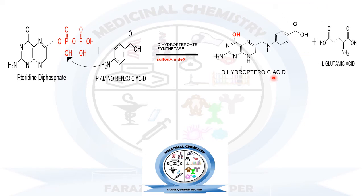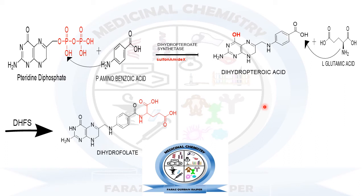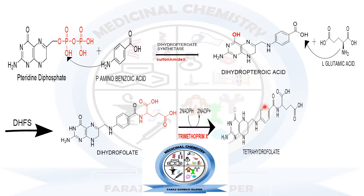In the next step, dihydropteroic acid will combine with L-glutamic acid. L-glutamic acid will be combined at the side of dihydropteroic acid and ultimately it will get converted into dihydrofolate. The enzyme that accelerates this reaction is dihydrofolate synthetase. In the next step, reduction of dihydrofolate will occur and it will get converted into tetrahydrofolate acid. The enzyme involved in this step is dihydrofolate reductase.